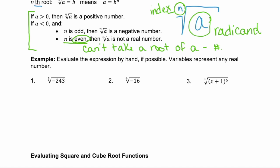So in example one, we're taking the fifth root of negative 243. First, look at a. a is our radicand. Well, our radicand is less than 0. So that's where we have those two situations above. Now we need to look at our index, n. Is our index odd or even? Well, our index is odd. So since it's odd, we know that our answer is going to be a negative number.